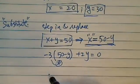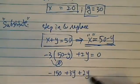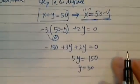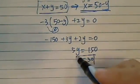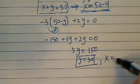Now let's open this up. I have minus 150 plus 3y plus 2y equal to 0, and 5y is equal to 150, so y is equal to 30. Y equal to 30, and then because x plus y equal to 50, of course x equal to 20.